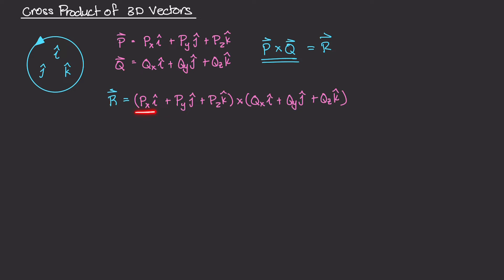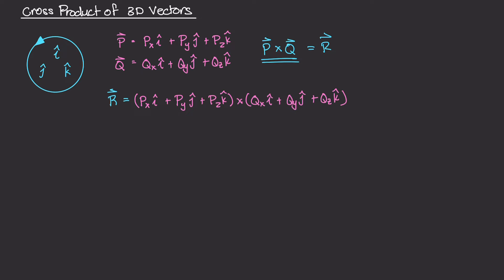We can use the distributive property of multiplication to figure out the cross-product. We take the first term and multiply it by each term of the second vector, and then do it all over again for the Y and Z components. When we do the cross-product of the different components, we resolve them using the diagram. The very first operation is the PX component crossed with QX: PX·I crossed with QX·I, which gives us PX times QX times I cross I.